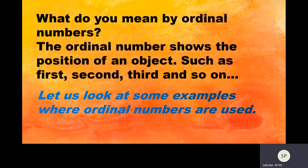Let us now understand what ordinal numbers are. The ordinal numbers show the position of an object, such as first, second, third, and so on. Just now we saw a classroom where students were sitting in an order, and the teacher denoted them as first, second, third, and so on. This is called ordinal numbers.